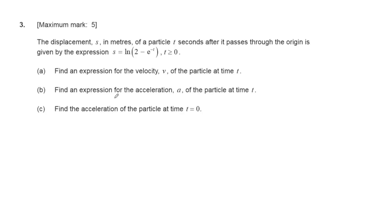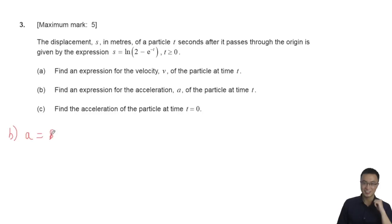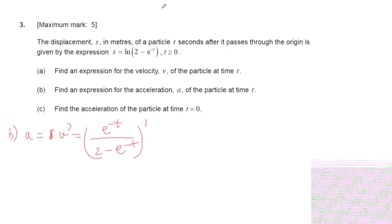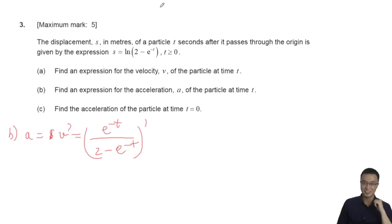For part b, find the expression for acceleration. Acceleration equals dv/dt. So we take v = e^(-t) divided by (2 - e^(-t)) and differentiate. Let me remind you of the quotient rule: for u divided by v, the derivative is (v·du - u·dv) divided by v squared.